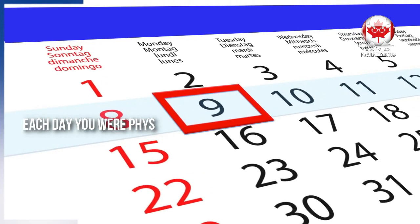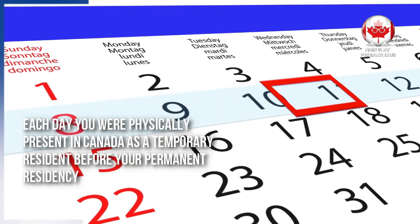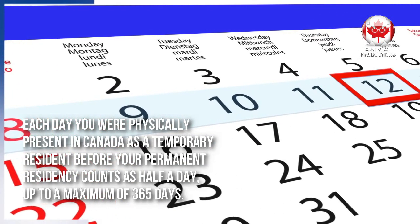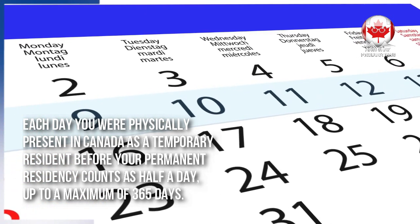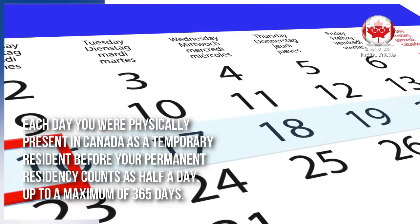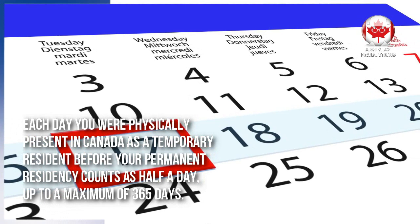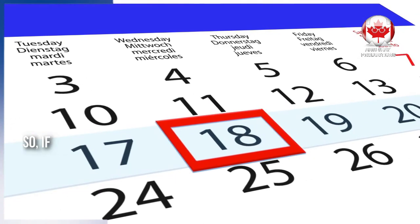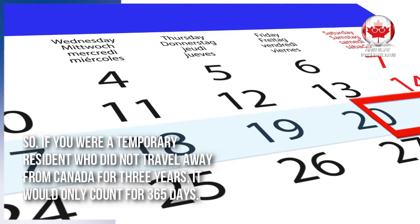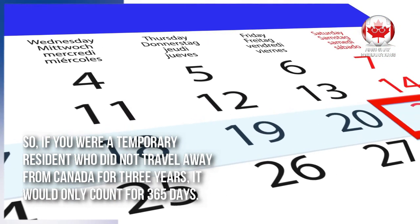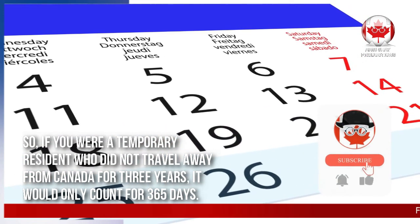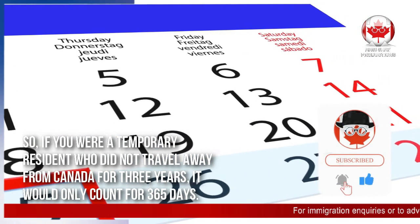Each day you were physically present in Canada as a temporary resident before your permanent residency counts as half a day, up to a maximum of 365 days. So if you were a temporary resident who did not travel away from Canada for three years, it would only count for 365 days.